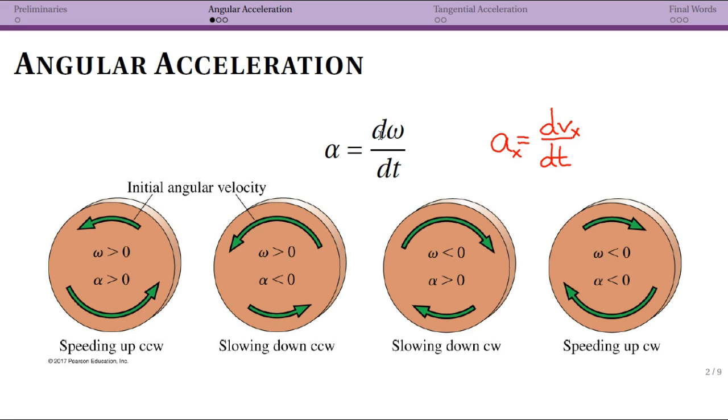What we need to think about now are some directions. The default is that a positive direction of angular velocity is counterclockwise. These four situations show that our initial angular velocity is on the top and our final angular velocity is on the bottom.